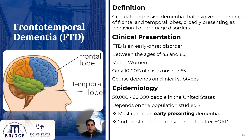Next on the list is frontotemporal dementia, which is a gradual progressive dementia affecting the frontal and temporal lobe, so it primarily affects behavior and language before it affects memory. It's an early onset disorder that begins between ages 45 and 65.